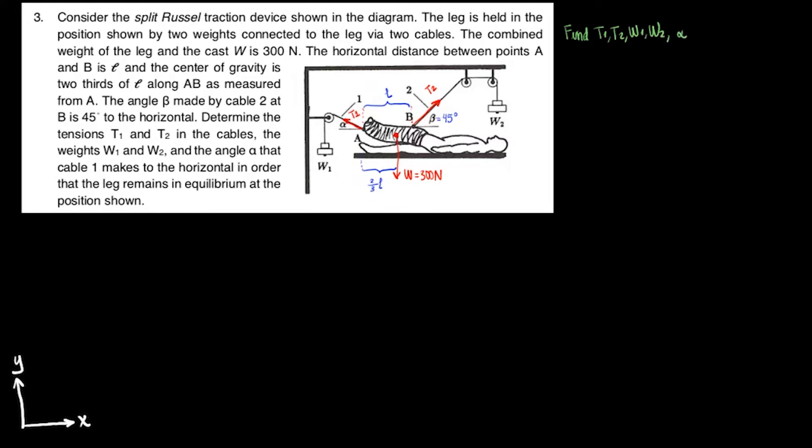We shall start by stating our balance equations. Sigma fx equals zero and sigma fy equals zero are the force balance equations. Then, we also have sigma mu O equals zero. I picked O, which is at the center of mass for the leg, as my origin point for the moment. But remember, you can pick any point. Just keep in mind that some will make the calculations easier than others.